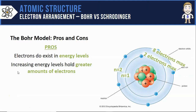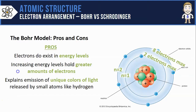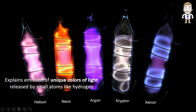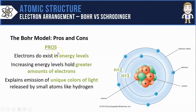We can even use this Bohr model to explain observable phenomena in real life, such as the emission of unique colors of light released by small atoms like hydrogen. If you've ever driven past a restaurant and noticed a glowing neon sign, you're seeing neon atoms giving off their own color of light. The Bohr model is pretty good at explaining why that happens.